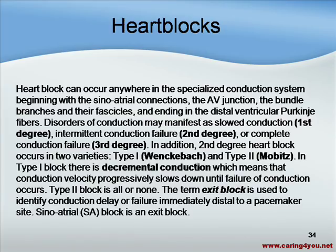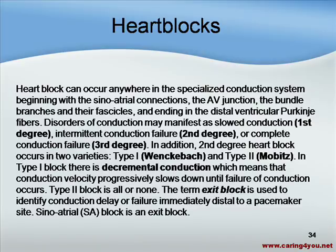Now we're going to talk about heart blocks. Heart block can occur anywhere in the conduction system, beginning with the sinoatrial connections to the AV junction, the bundle branches, and ending in the distal ventricular Purkinje fibers. Slowed conduction is first degree heart block. Intermittent conduction failure is second degree heart block. No conduction at all — conduction failure — is third degree heart block.